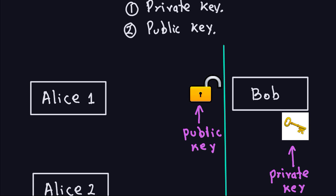That is a very important idea in asymmetric cryptography. Having a public key and a private key has a lot of advantages. Anyone can encrypt messages and send them to Bob, but only Bob can decrypt those messages, and that actually solves the problem of key establishment or sharing the key. Alice doesn't need to know Bob's private key — she only needs to know how to encrypt, and that's all.